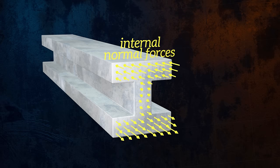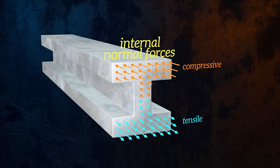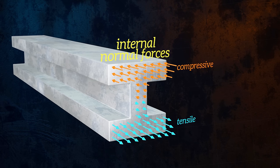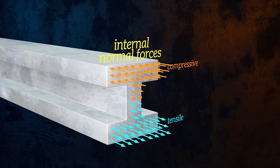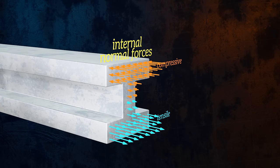If the beam is sagging, the top of the beam will get shorter, and so the normal forces in the top of the beam will be compressive. The bottom of the beam will get longer, and so the normal forces in the bottom of the beam will be tensile. Each of the tensile normal forces has a corresponding compressive force equal in magnitude but opposite in direction. As such, these forces don't produce a net normal force, but they do produce a moment.